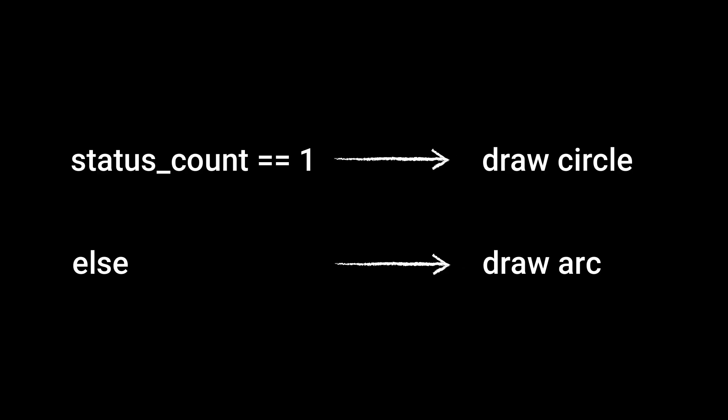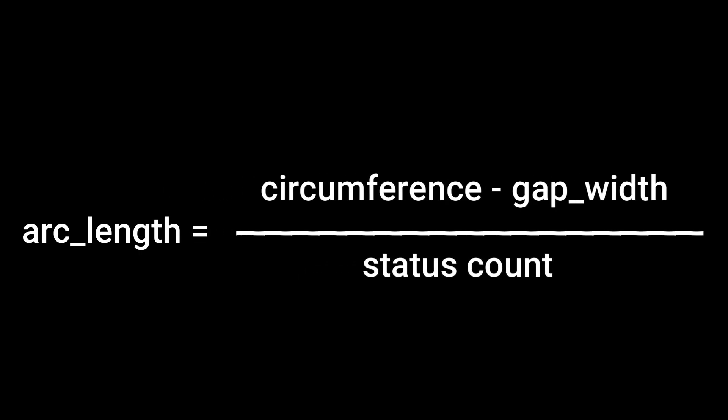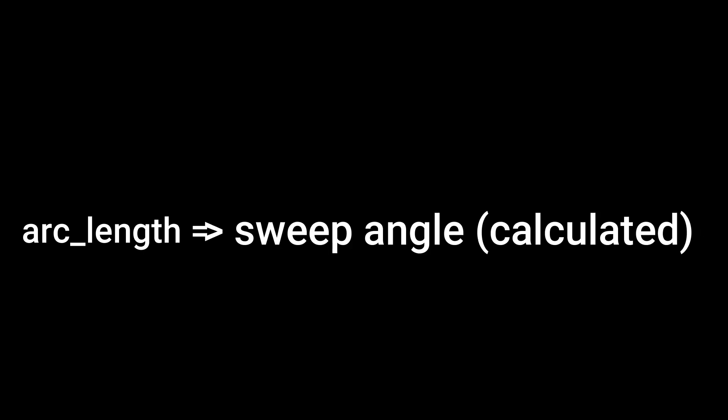Now if there's a single status set by a user then we just draw a simple circle. Otherwise we calculate the gap width and subtract it from the circumference of the circle, and then divide the rest of the length by the number of statuses we need to set. With this length we calculate the angle required to draw the arc. That's pretty much it.